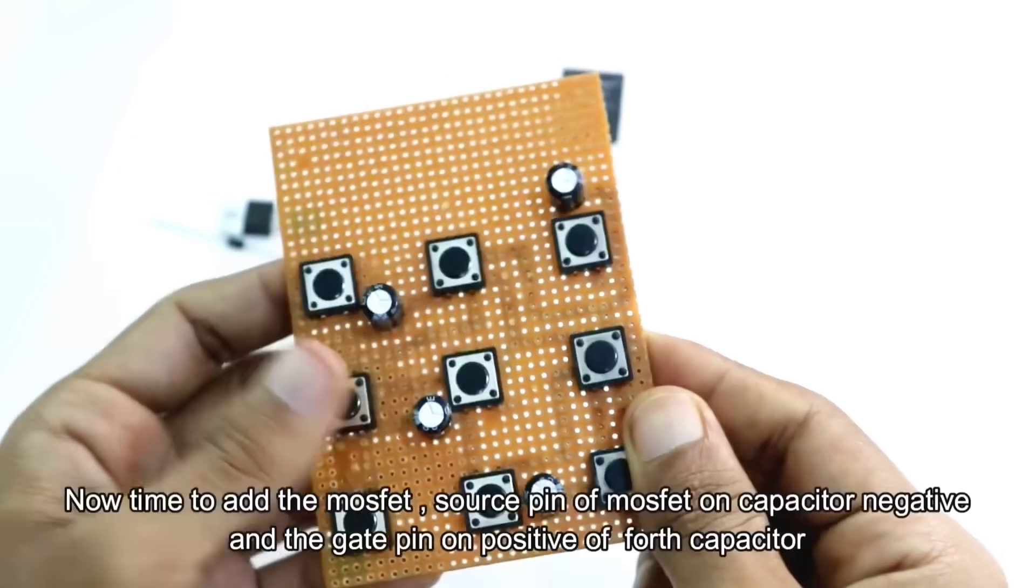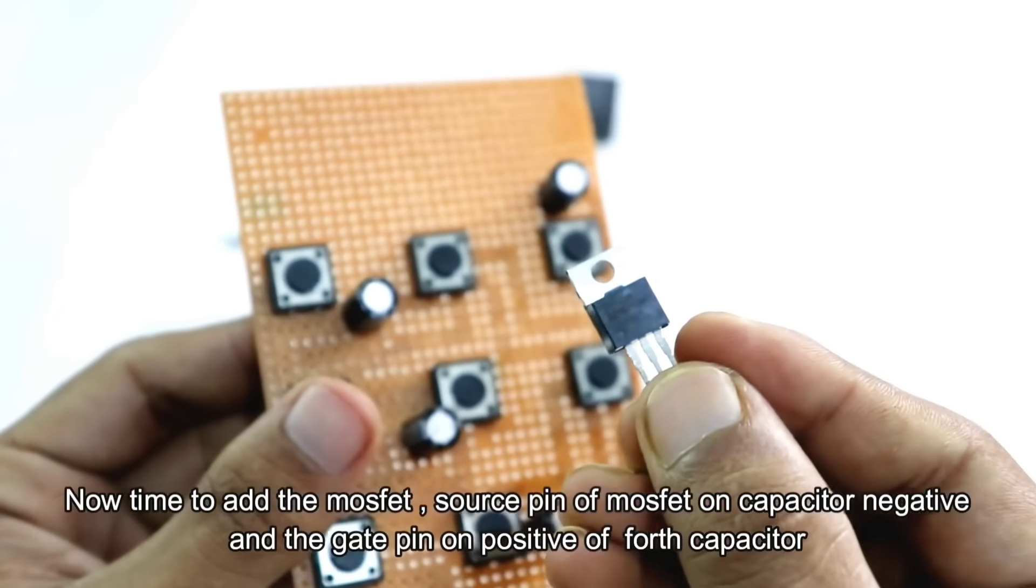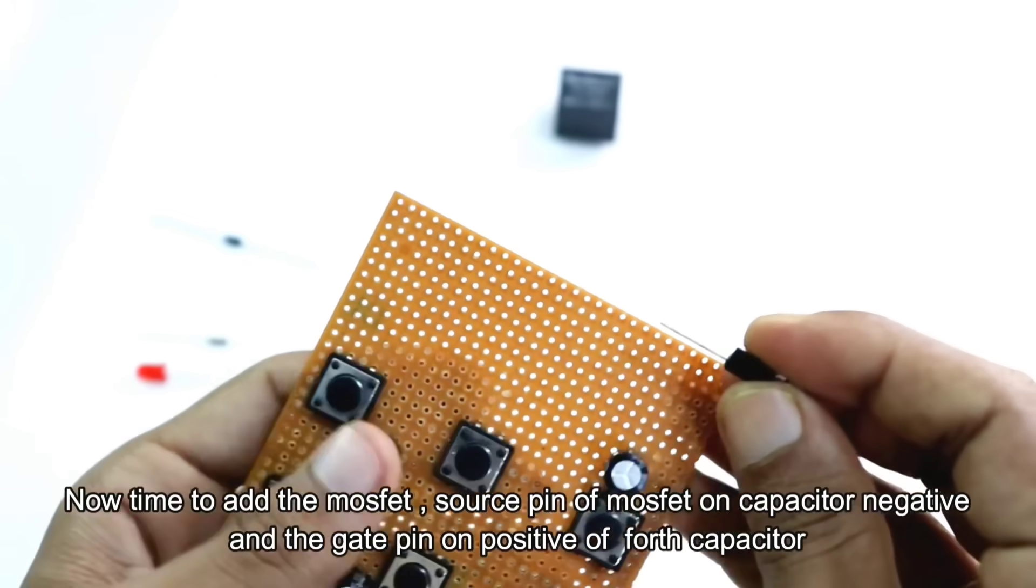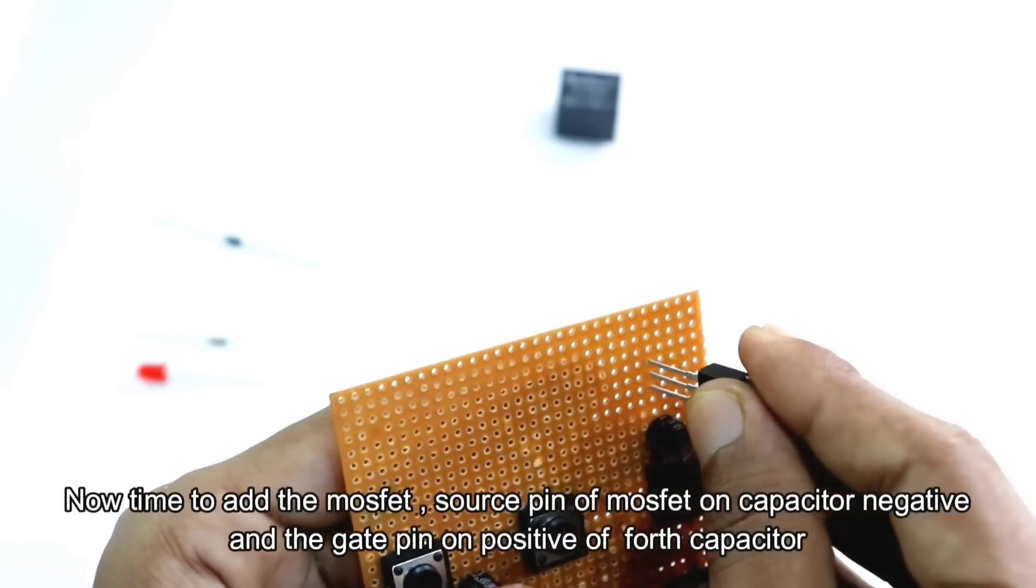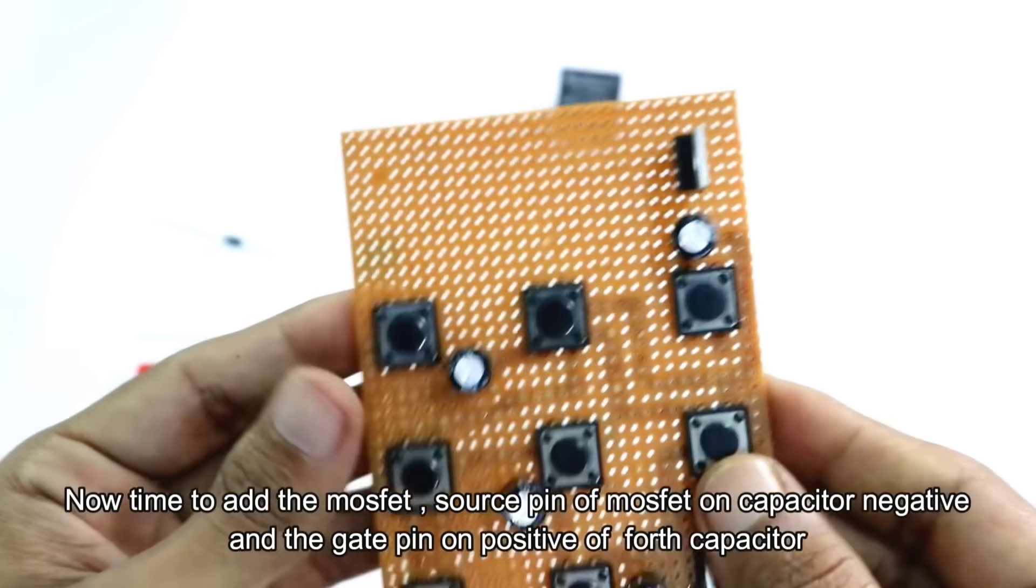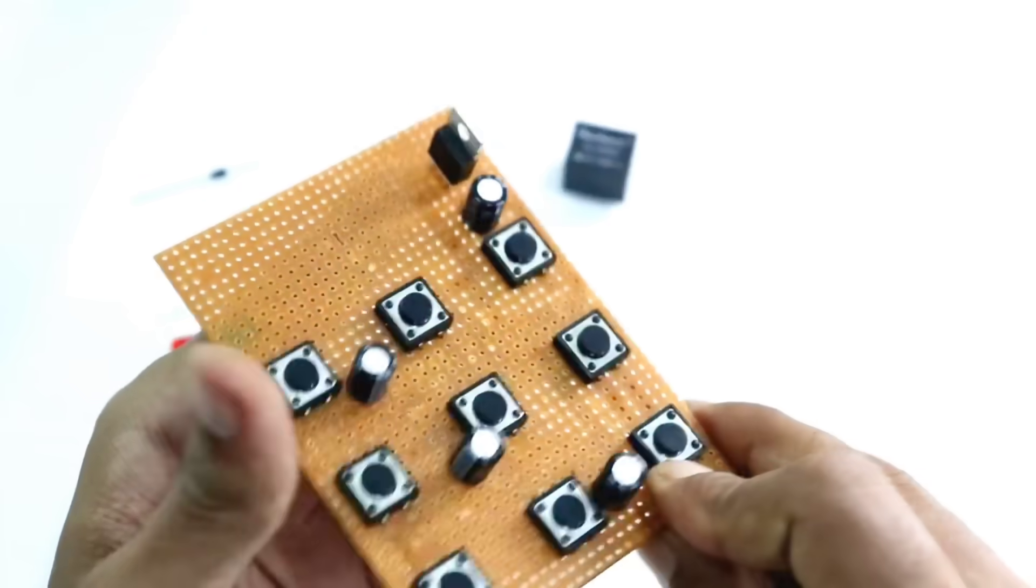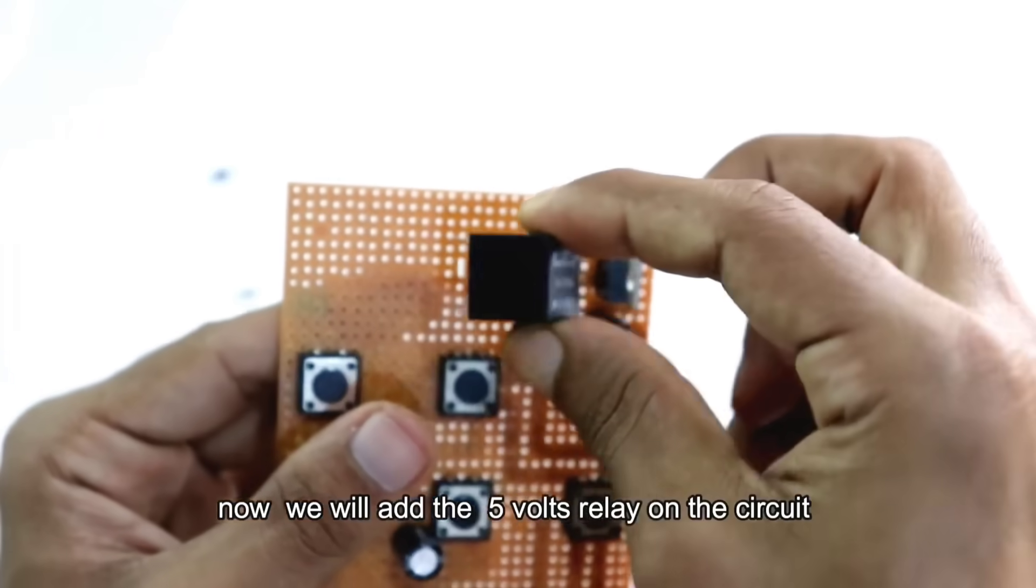MOSFET connection. Next, we install a MOSFET, N channel. Source pin of the MOSFET is connected to the negative terminal of the fourth capacitor. Gate pin goes to the positive terminal of the same capacitor. This configuration allows the MOSFET to control the current based on the capacitor's charge, acting like a smart electronic switch.